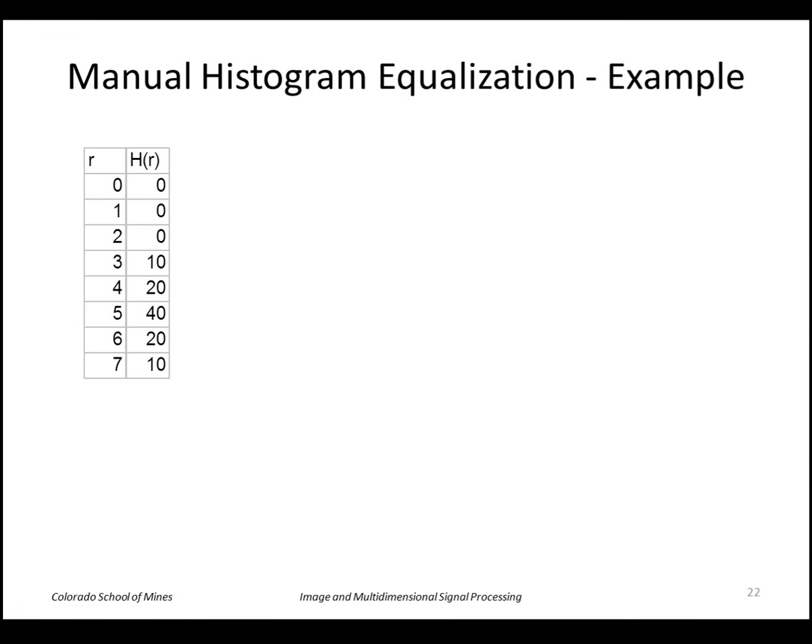Here's an example that's so easy you can do it by hand. We want to compute the transformation function for this. First of all we sum the values here and we get 100. The probability of each value of r we simply divide h by 100, so we get 0, 0, 0.1, 0.2, 0.4, 0.2, 0.1.